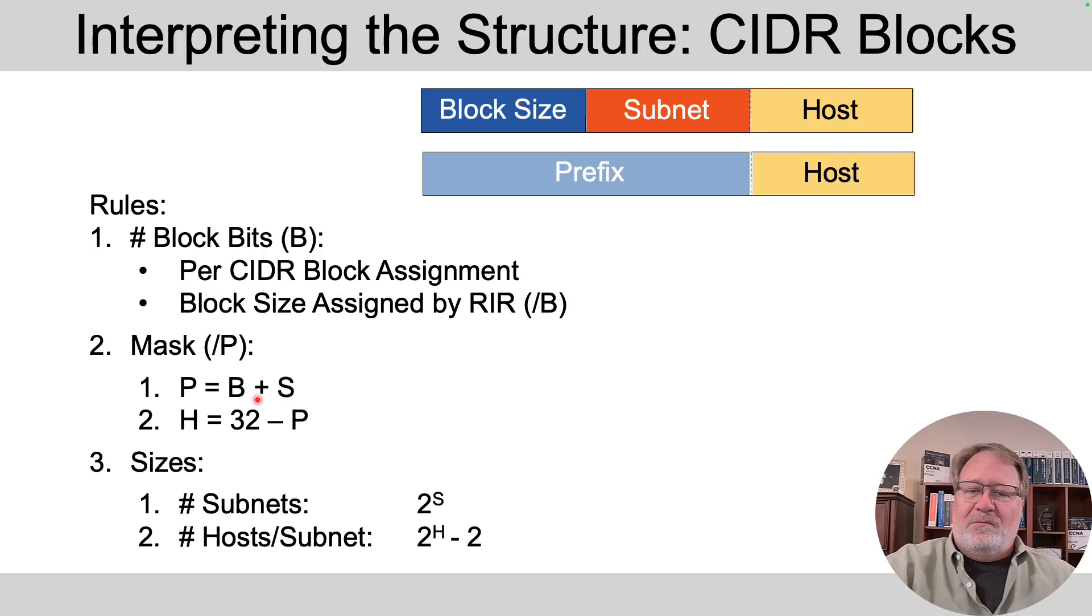So just another look at that. If we think about the number of block bits per what you receive from the RIR, think of them on the left. So instead of network bits as 8, 16, or 24, think of this as the block size bits over here.